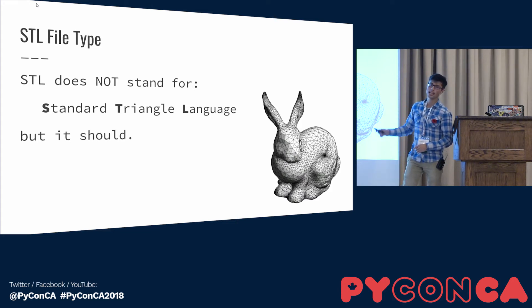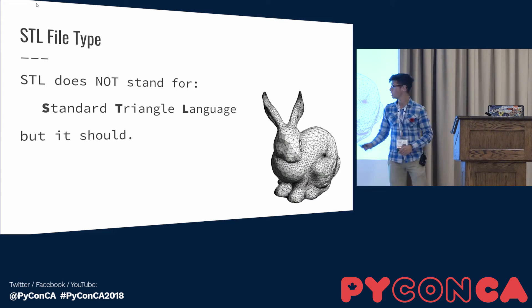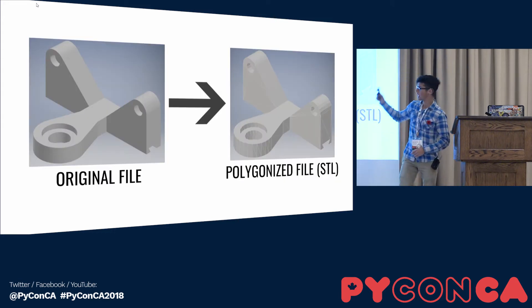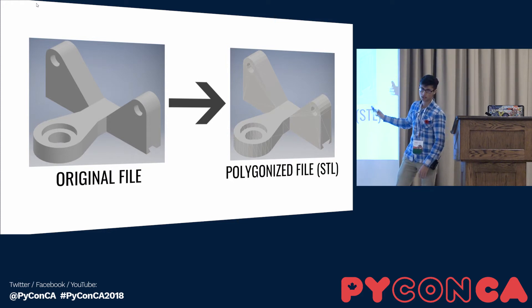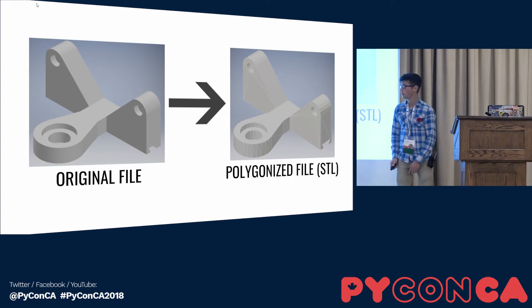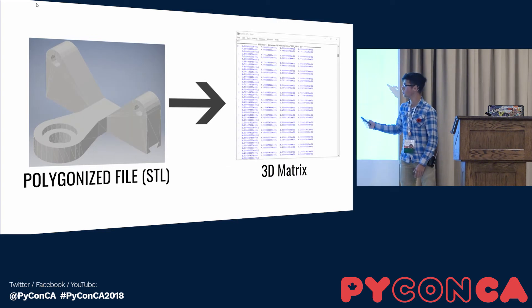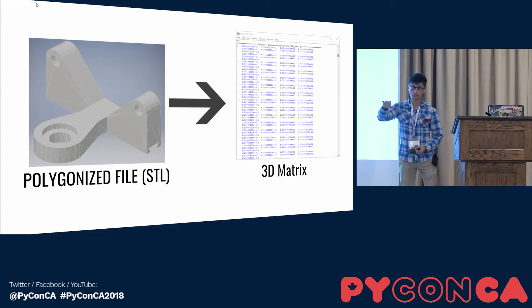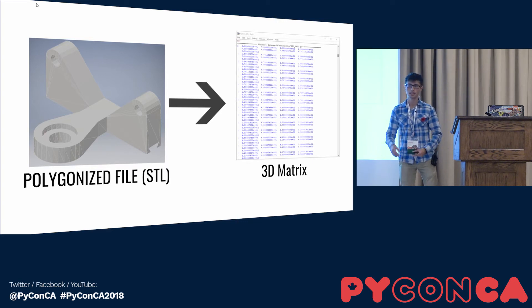STL does not stand for standard triangle language, but it really should. What an STL does is take a normal CAD file and polygonize the shape — it represents the shape entirely as triangles. With code, we can convert this into a 3D matrix. The first layer of the matrix is each of the triangles in the mesh. The second layer is each of the vertices in each triangle. And the third layer is each of the XYZ coordinates for each of the vertices.